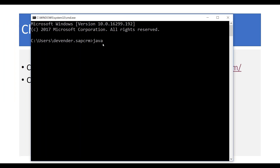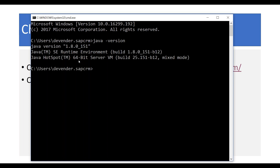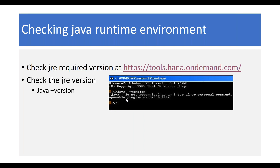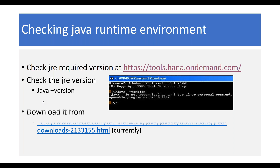You should see JRE version 1.8 specified. If you don't have Java installed, it will say 'java is not recognized as an internal or external command.' Don't worry — what you need to do is go to the JRE download URL. This link is available in the description under this video, so you can get it from there.